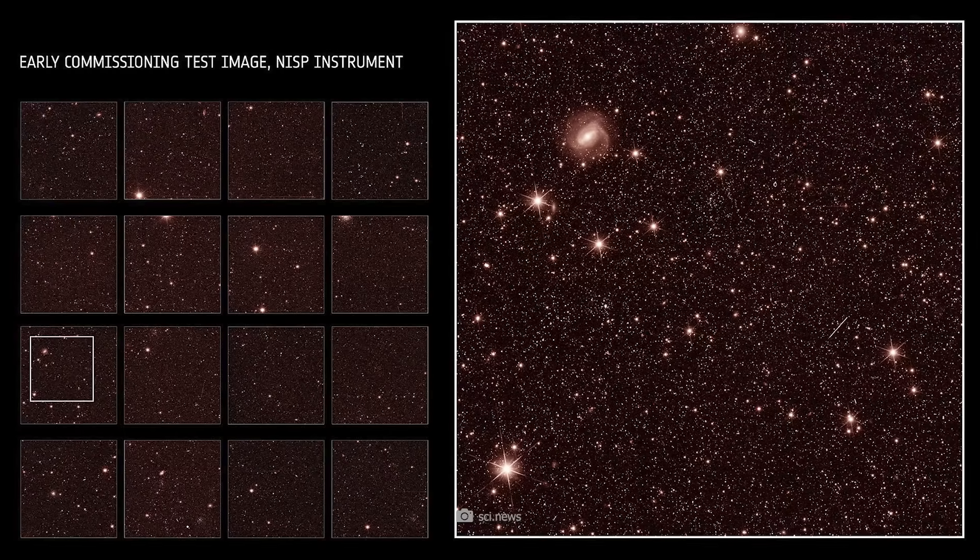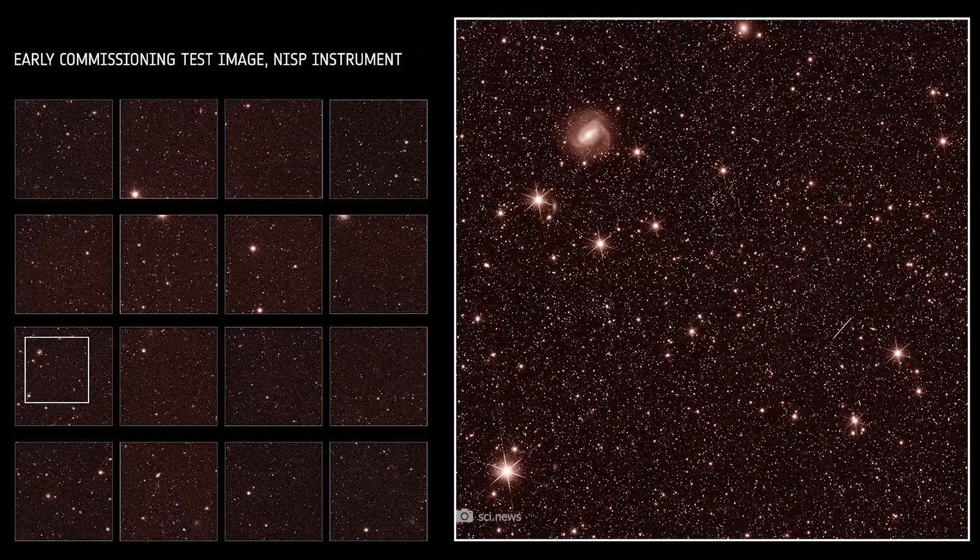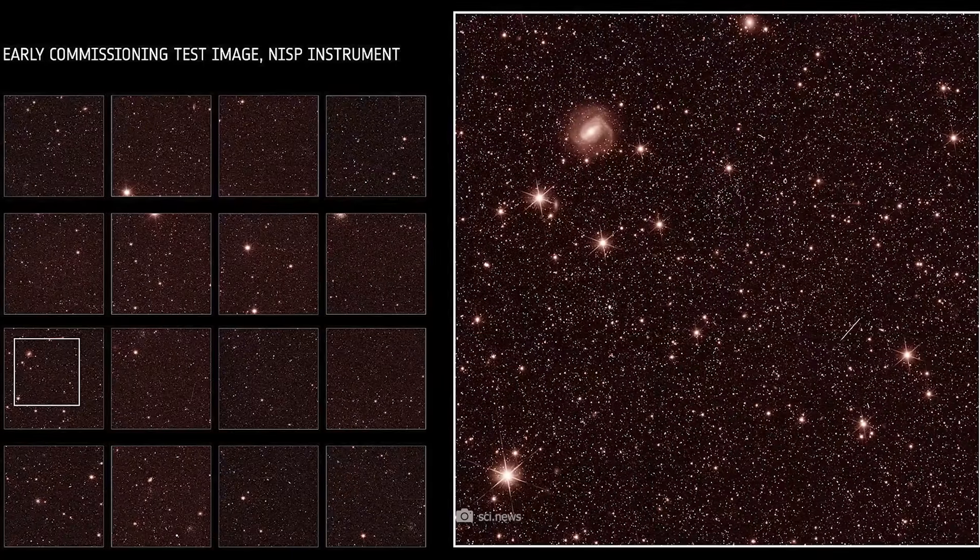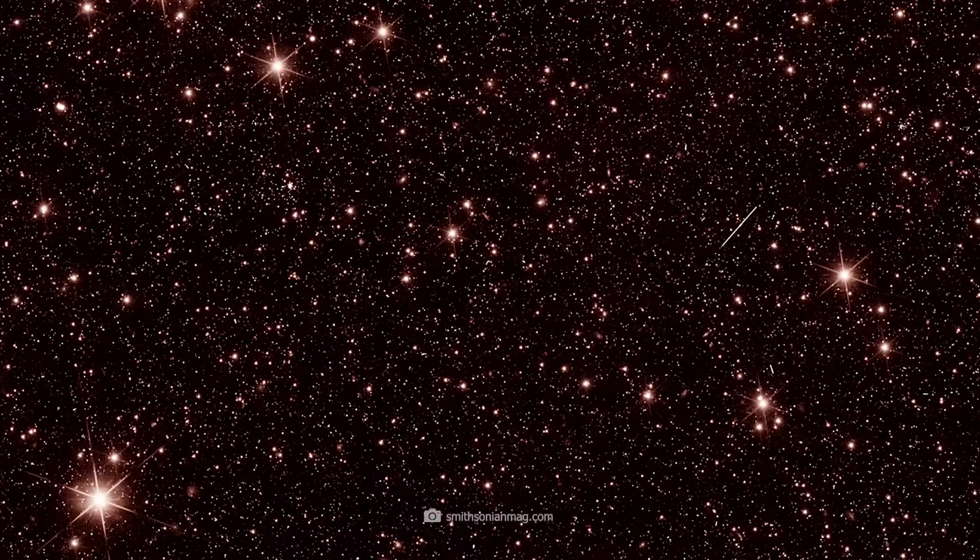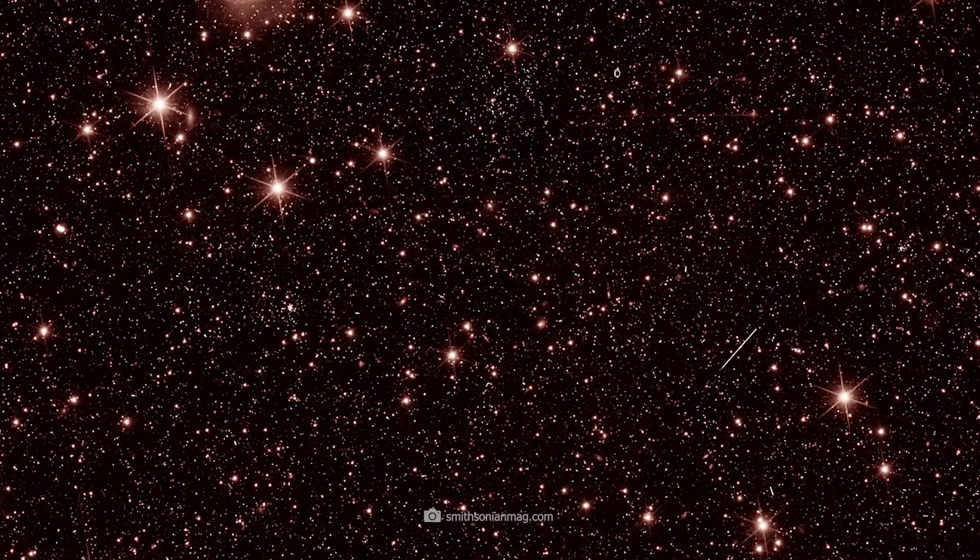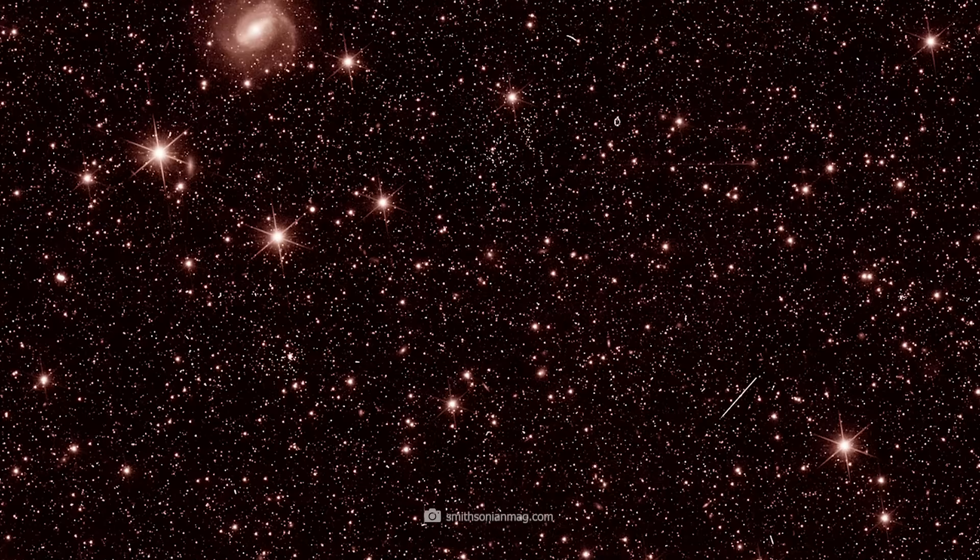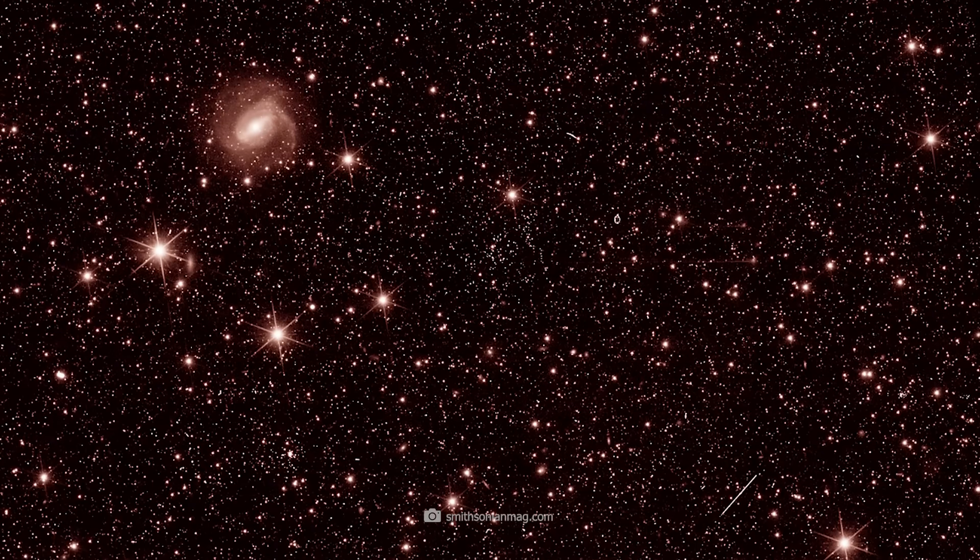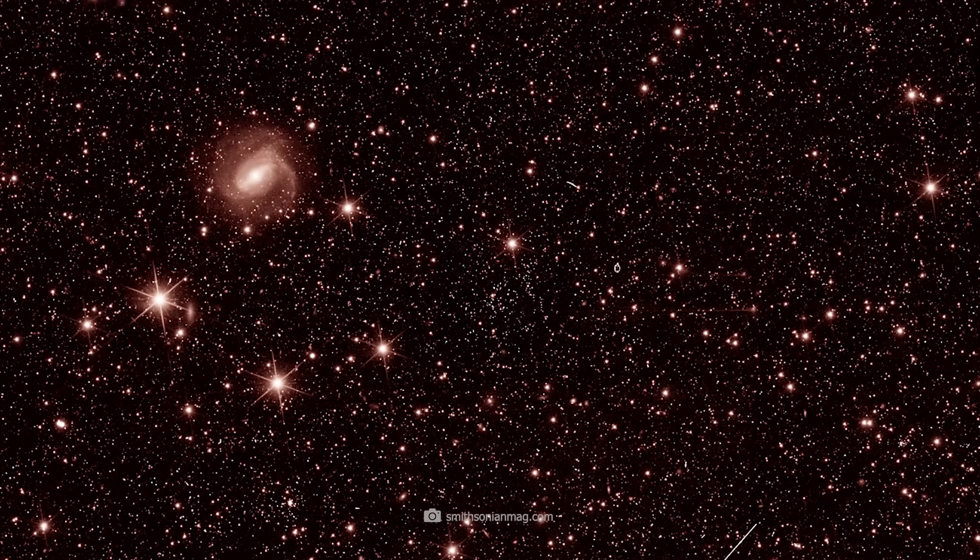The second image was created with the NISP camera and shows a section of the sky containing about 200,000 stars and galaxies. The colors in this image represent different wavelengths of near-infrared light, with blue being the shortest and red the longest. The resolution of this image is about 0.3 arc seconds, which is slightly lower than the VIS camera.